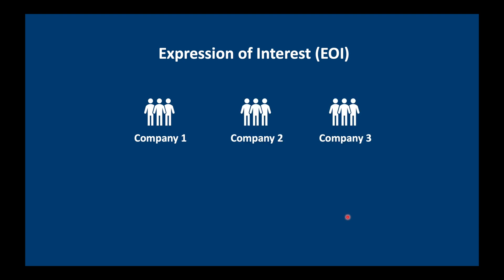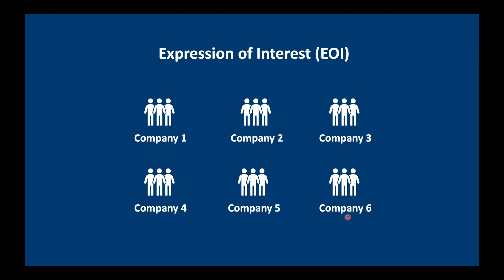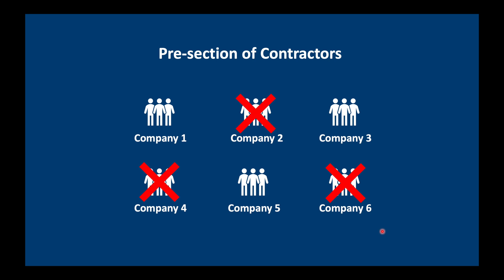The first thing we do is launch what's called an expression of interest. We ask who would like to drill our water well, and we're going to get a lot of responses from different contractors all saying they'd like to bid for this project. If we have too many contractors expressing an interest, we need to eliminate a few of them — otherwise we'll end up with a lot of unnecessary paperwork.